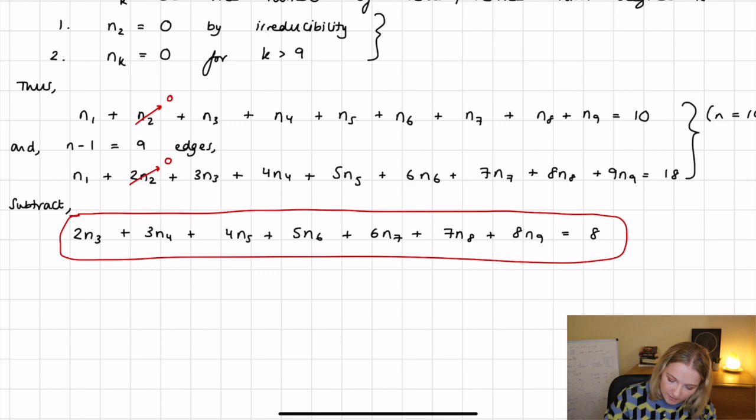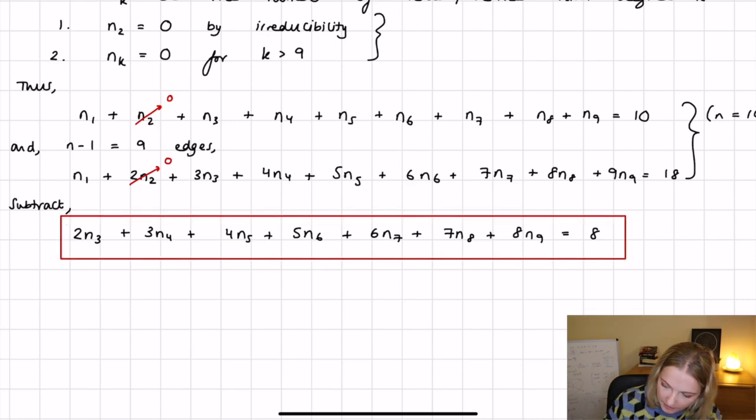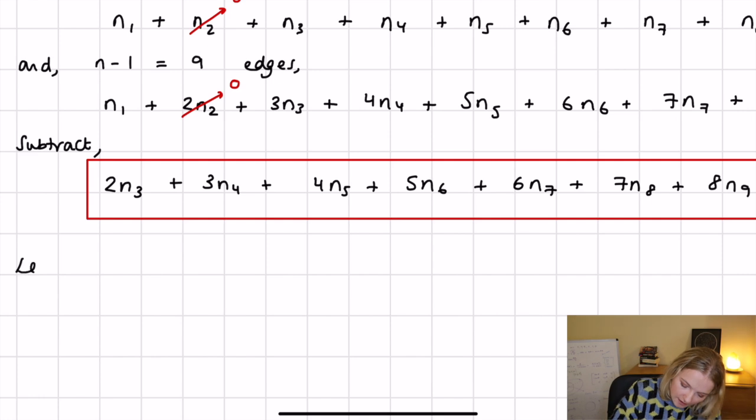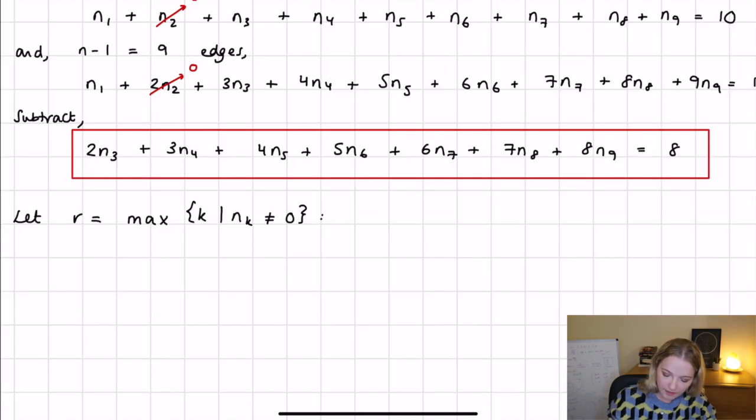So what we can start by doing is look at different cases. So if we start by saying let r and r is just going to be the maximum number that you can have as k where n_k does not equal 0. So what we're going to do is we're going to let r be the maximum value of k where n_k does not equal 0 and we're going to look through all these different cases and hopefully draw some trees that will give us the solution.